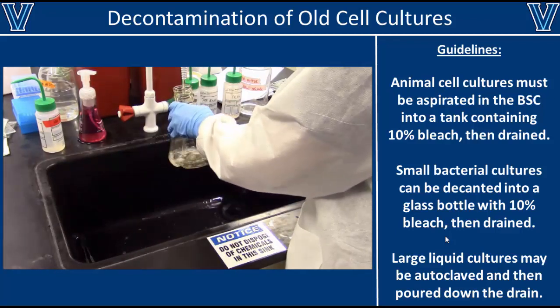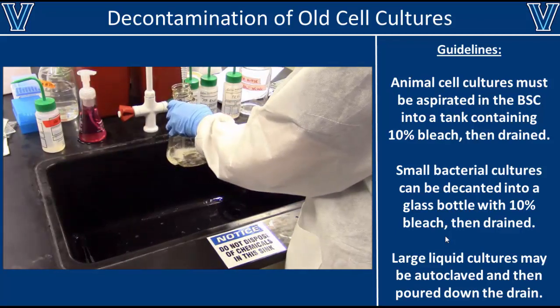Bleach tends to damage a lot of the polypropylene flasks that we use for bacterial cell culture — for instance, the flask shown in the video would become cloudy after exposure to bleach. To review: for animal cell cultures, take them into the BSC and aspirate any liquid away, sterilize that with bleach, then throw your used plates or flasks into the red biohazard bags. Small bacterial cultures can be decontaminated with 10% bleach in a 1-to-1 ratio and then drained down the sink. Large bacterial cultures can be autoclaved and also poured down the sink. Just as a reminder, never put bleach in the autoclave.